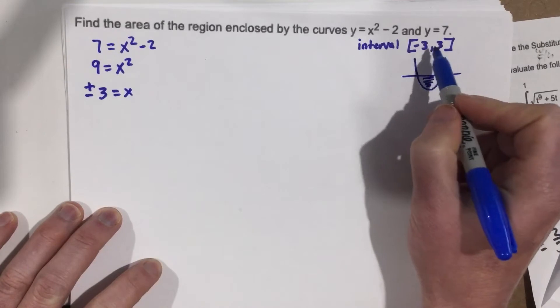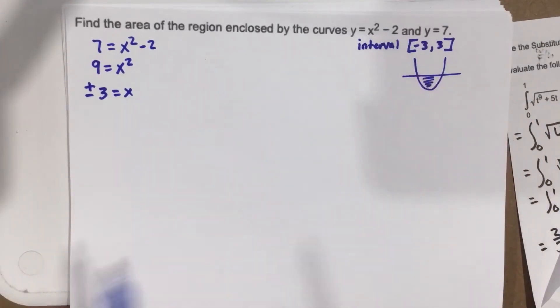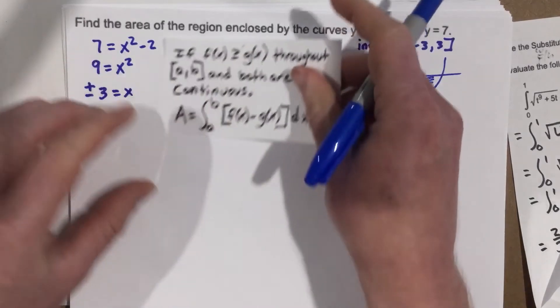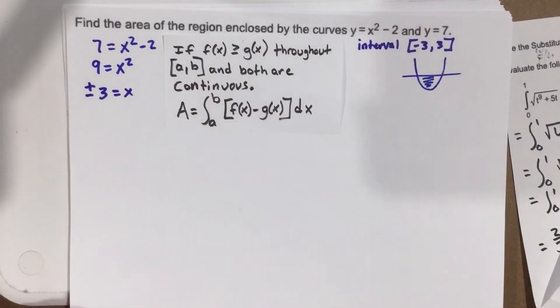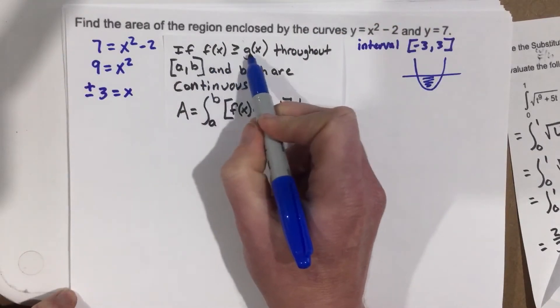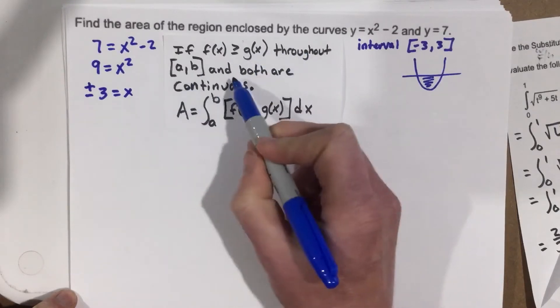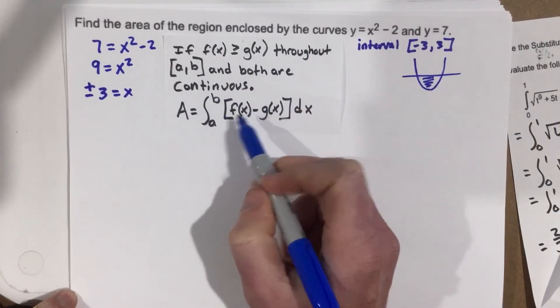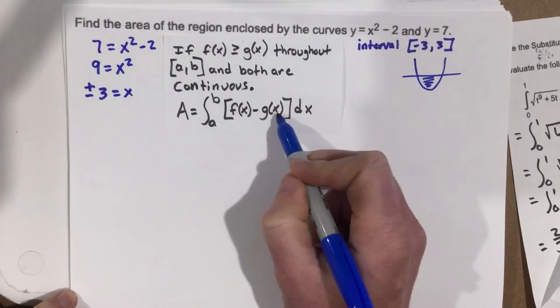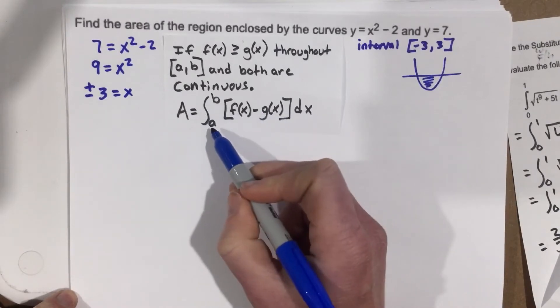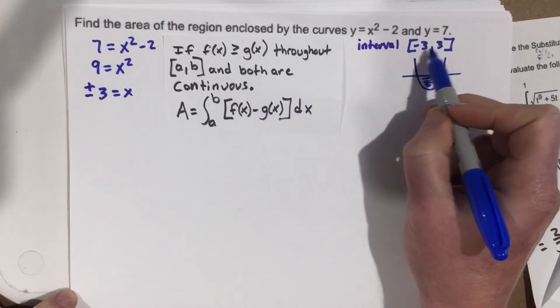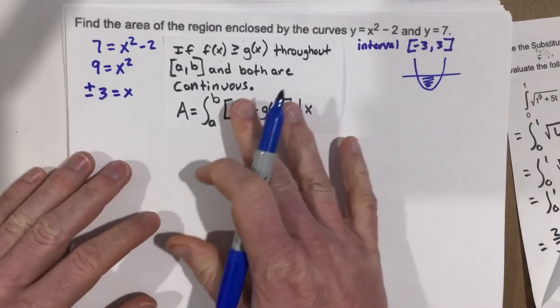So they tell us negative 3 to 3. We know that we can use this right here, which says if f of x is greater than g of x throughout a, b, and both are continuous, we can say that we're going to take f of x minus g of x and integrate it from our interval, which is negative 3 to 3. So let's set this up.